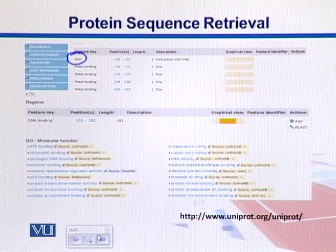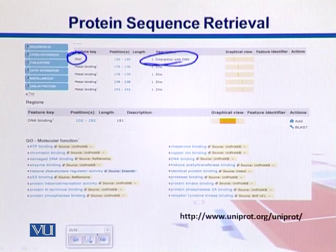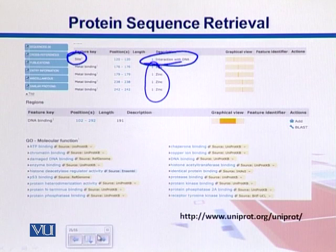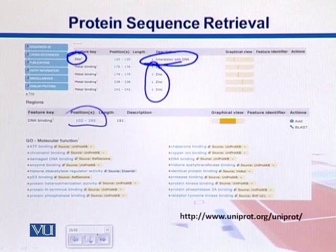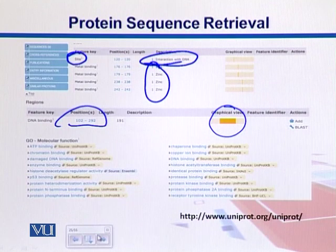There are some unique sites in different proteins which have specific properties. For example, there is one amino acid present in this protein that interacts with DNA. Similarly, there are different metal binding sites — mainly binding to zinc metal — and those amino acid positions are shown here. Further down we can also see the DNA binding region, for example amino acids 102 to 292, shown as a graphical view.